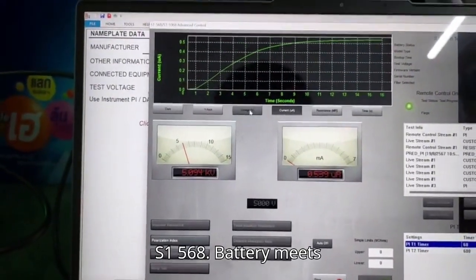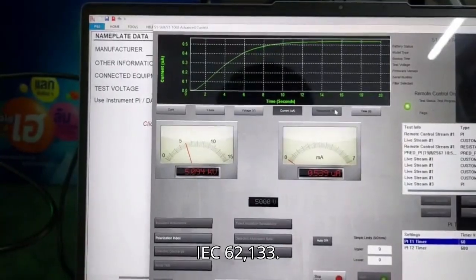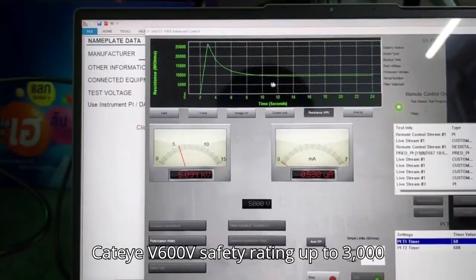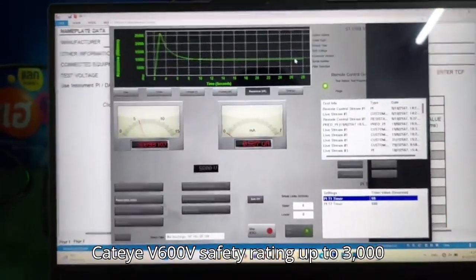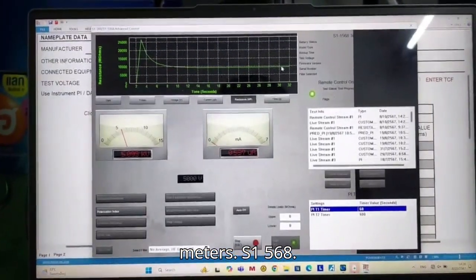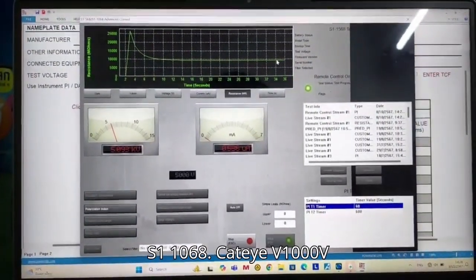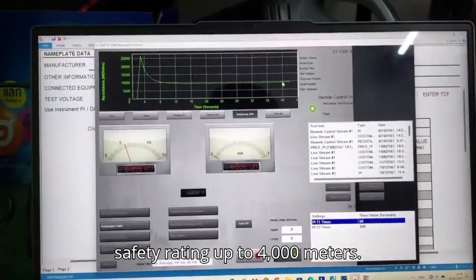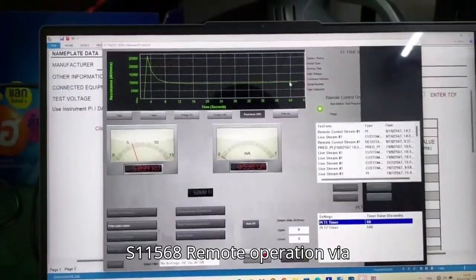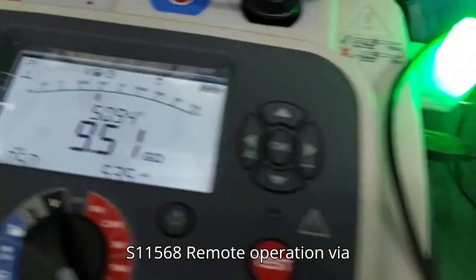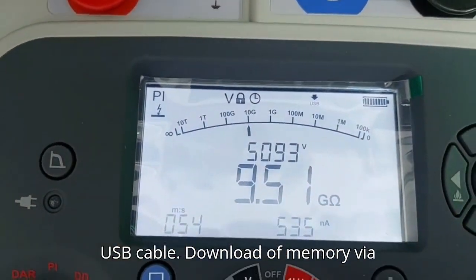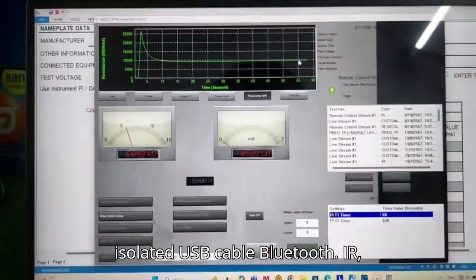S1-568 battery meets IEC 62133, CAT IV 600V safety rating up to 3000 meters S1-568 S1-1068, CAT IV 1000V safety rating up to 4000 meters S1-1568. Remote operation via USB cable, download of memory via isolated USB.